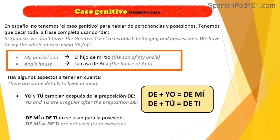In Spanish we don't have the genitive case to establish belonging or possession. We have to say the whole phrase using 'de,' which means 'of.' So in Spanish we don't say 'my uncle's son' like that — we have to say 'the son of my uncle': 'el hijo de mi tío.' Or 'Ana's house' becomes 'the house of Ana': 'la casa de Ana.'